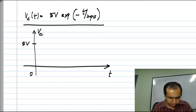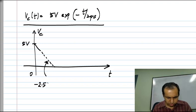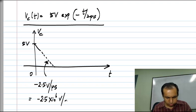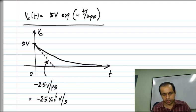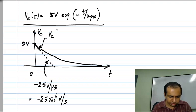So, it will start off with a slope. If you calculate the slope of that line it will be minus two point five volt per microsecond or minus two point five times ten to the six volts per second. But of course, the slope would not stay that way. It will keep on continuously reducing and asymptotically the voltage goes to zero. This is Vc of t.